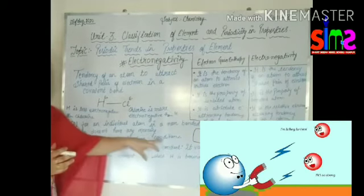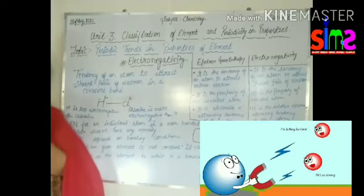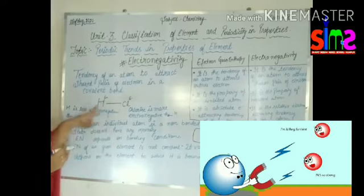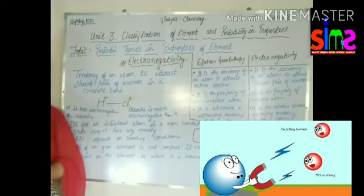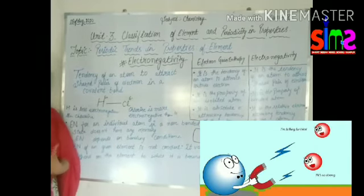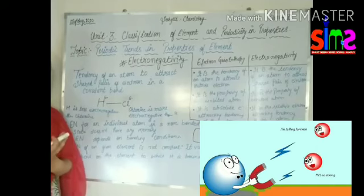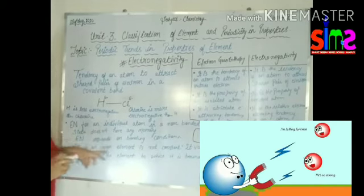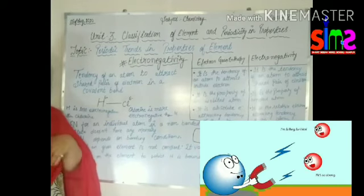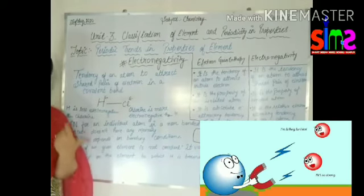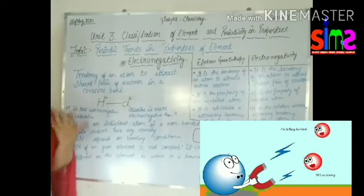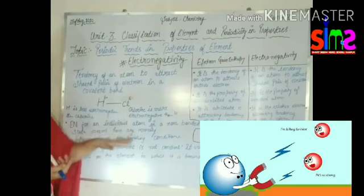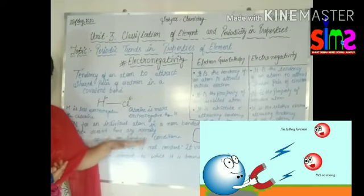Electronegativity depends on bonding conditions. With chlorine, the electronegativity depends on which atom it is bonded with. The electronegativity varies depending on the bonding conditions.